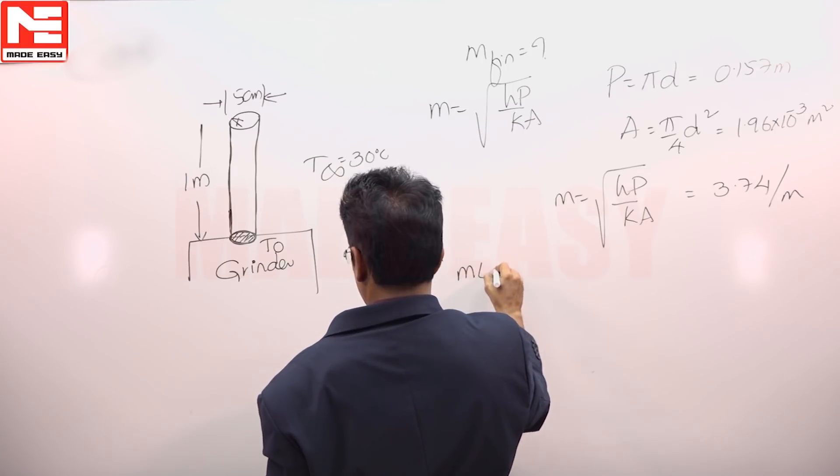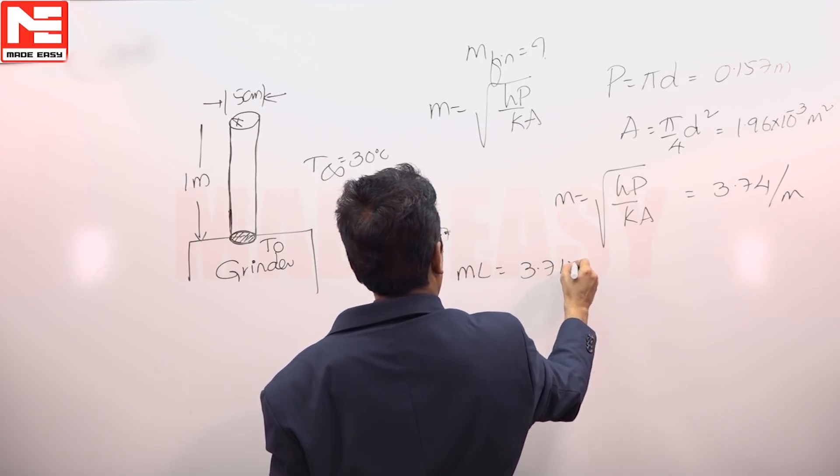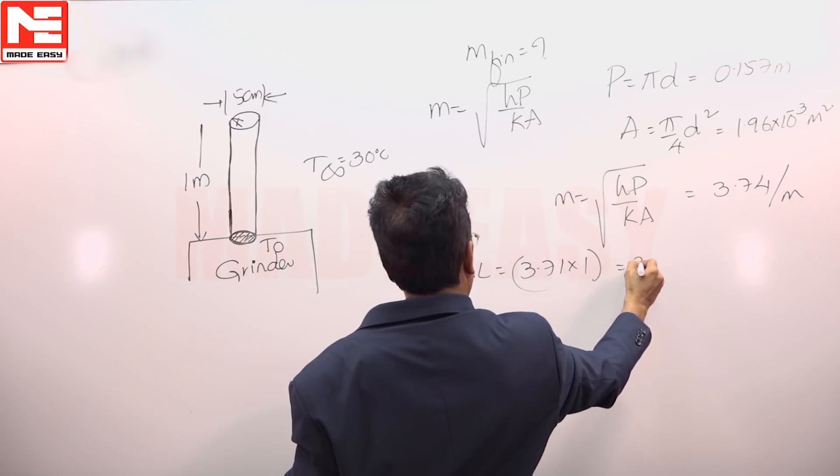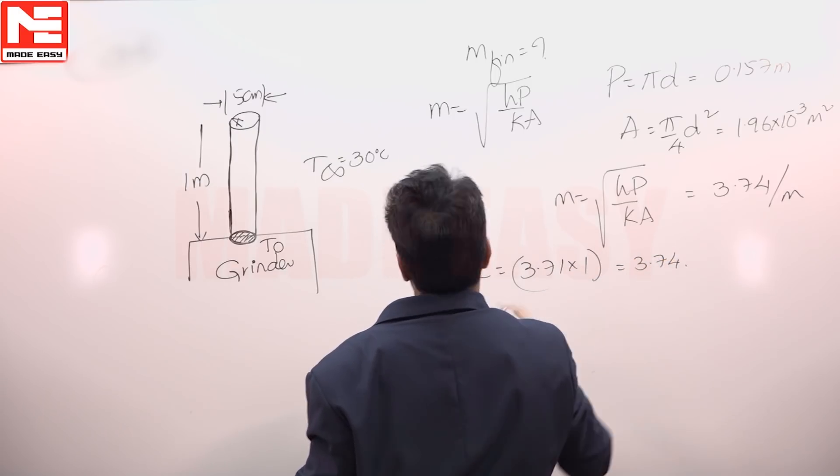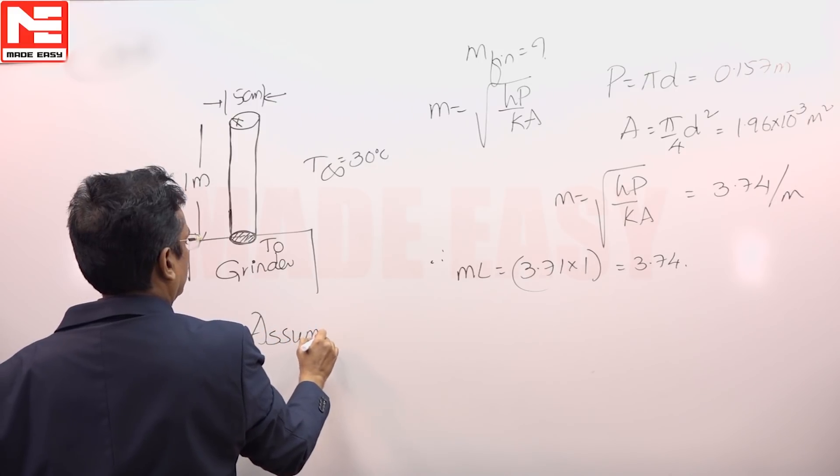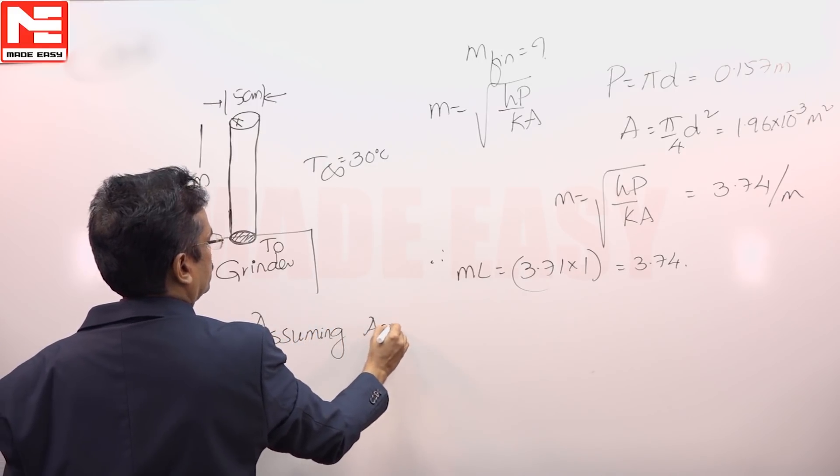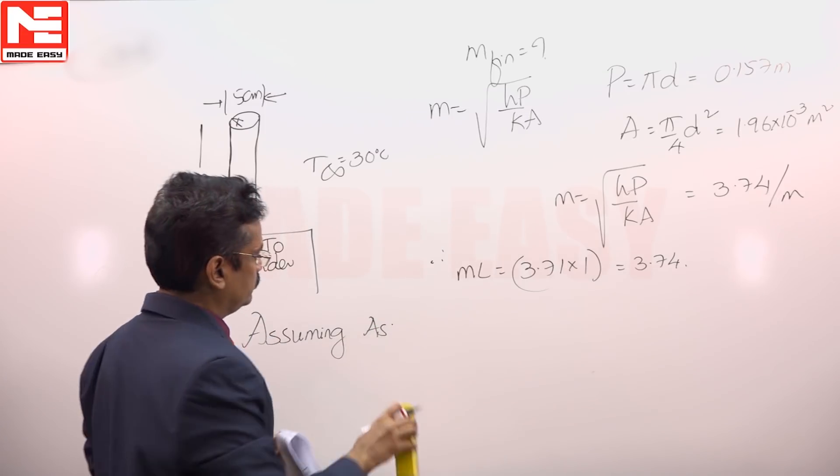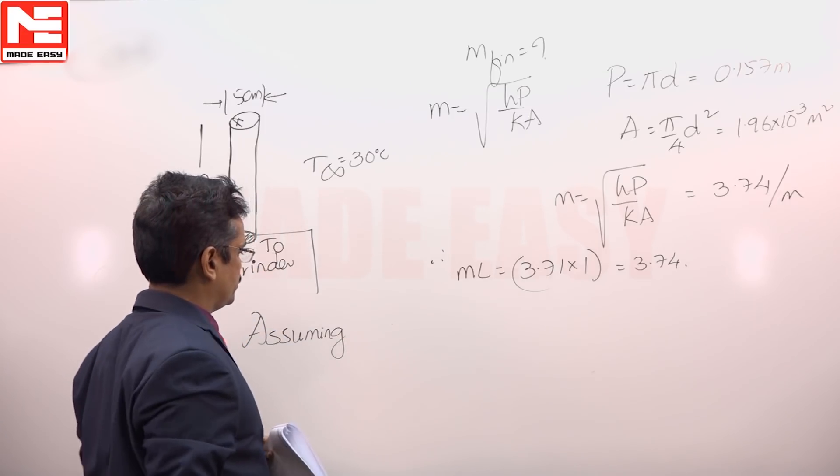Therefore, M value will be 3.74 × 1. Assuming insulated tip because this is the most prominent case, generally we assume or rather I call it as case 2.